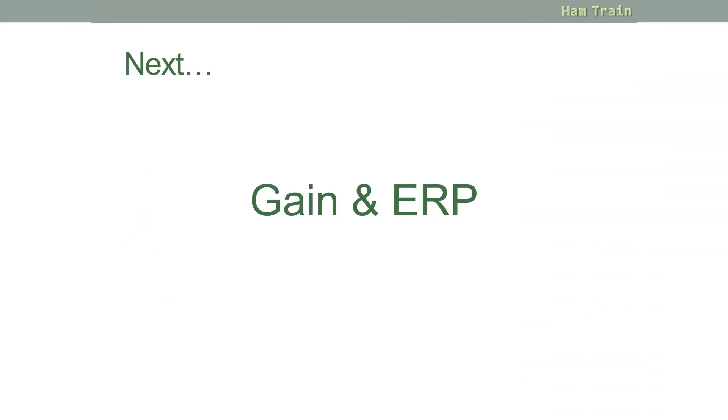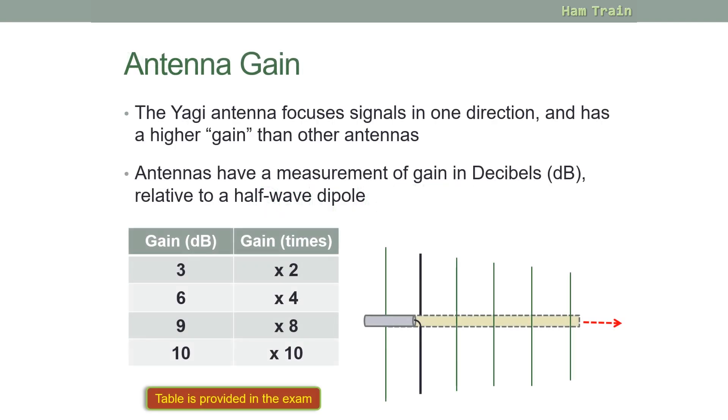Now we move into a tiny bit of maths, where we're talking about gain and ERP. So an antenna is said to have a gain. The Yagi antenna, as I've just mentioned, focuses the energy in one direction, and therefore has a higher gain than the other antennas we've talked about. Antennas have a measurement of gain in decibels, or dB. This is relative to a half-wave dipole.